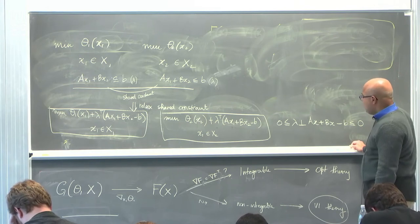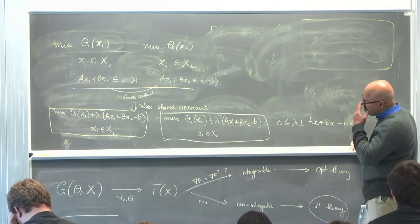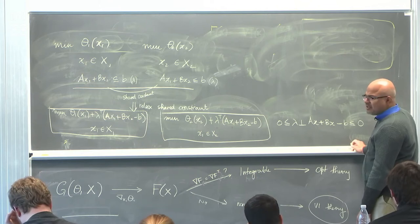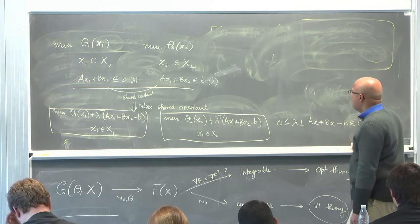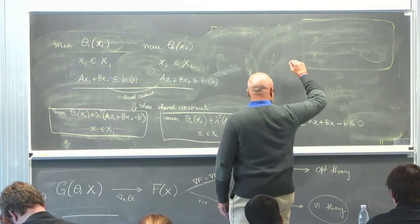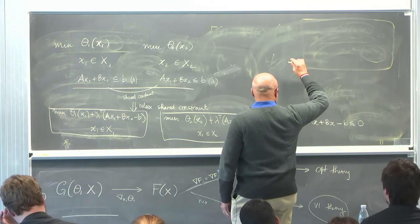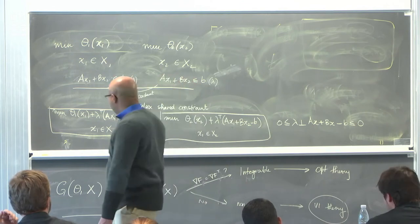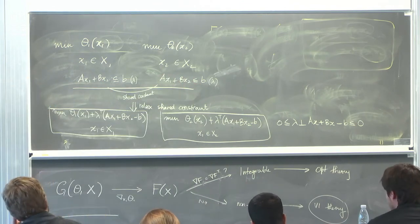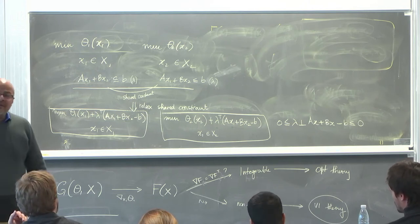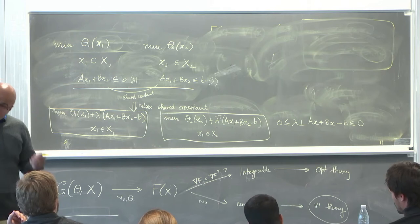In this case, lambda is a parameter to both players—lambda and x1 are parameters, lambda and x2 are parameters. I'm looking for a particular type of equilibrium where lambda is the same for all players—they're sharing the multiplier. It's a common multiplier.